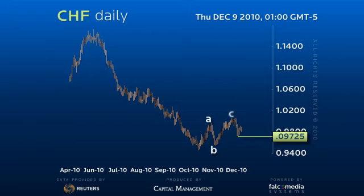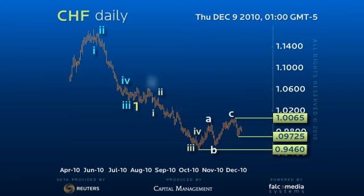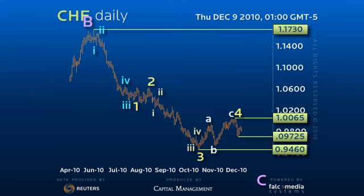This supports our bearish view that the entire rally from $94.60 to $100.65 was an Elliott fourth wave that demands a final decline to marginal new lows to complete a trend sequence, or C-wave, from the last major $117.30 corrective high.